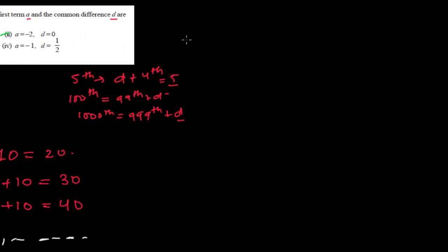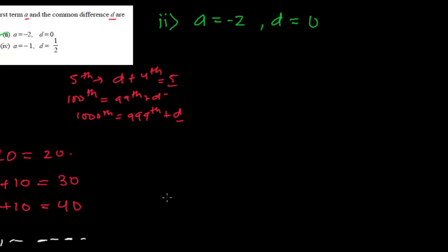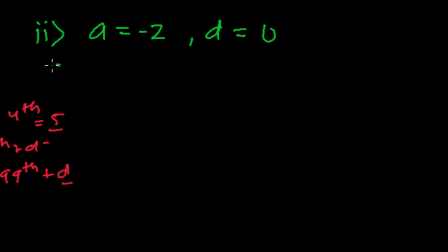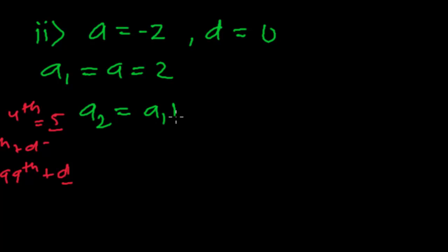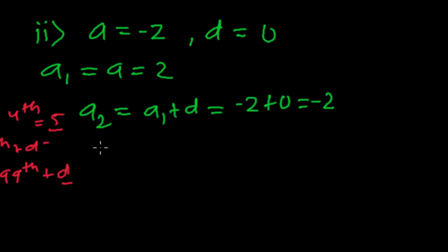Let me write this here. The first term is negative two, and the common difference is zero. So what will we get? Here A1 will be, of course, A, that is negative two. And A2 will always be the first term plus the common difference. The first term here is negative two, and the common difference here is zero, so it is just negative two.